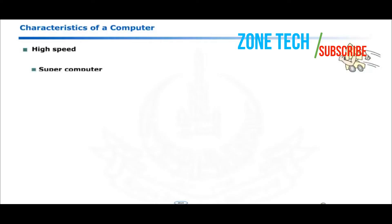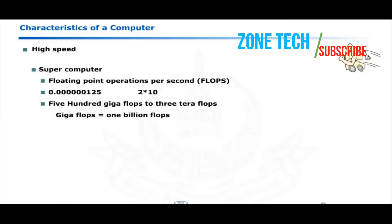The speed of supercomputer is measured in terms of floating point operations per second. Floating point numbers include very small or very large numbers. Supercomputers operate at a speed of 500 gigaflops to 3 teraflops. A gigaflop is 1 billion flops.